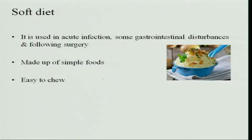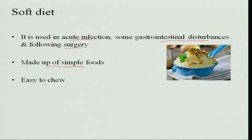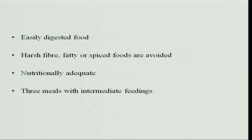Soft diet is also used in acute infection, when the person cannot tolerate food, any gastrointestinal disturbances, and following surgery — after surgery the gastrointestinal system becomes a little slow, so soft diet aids easy digestion. It is made up of simple foods that are easy to chew and easily digested so the gastrointestinal system is not stressed. Harsh fiber, fatty, or spiced foods are avoided; bland foods are preferred so as not to irritate the GI system. The soft diet must still be nutritionally adequate, incorporating all food groups.